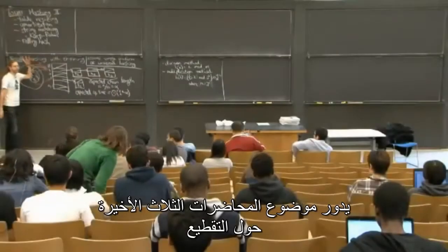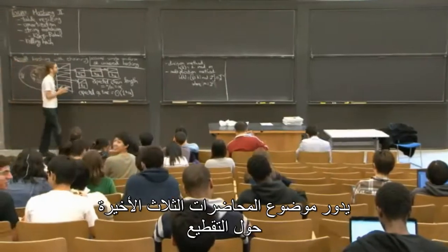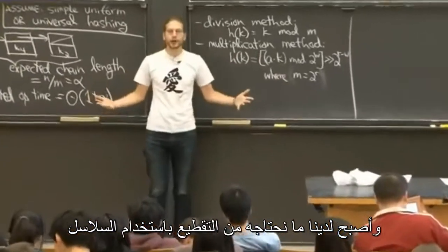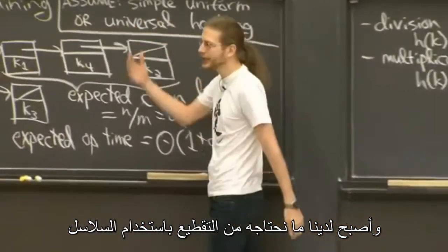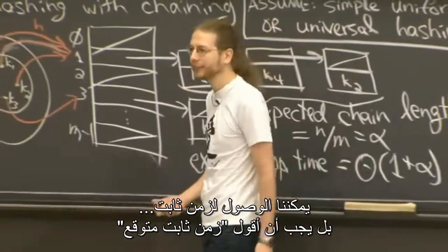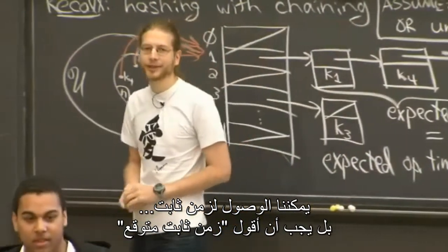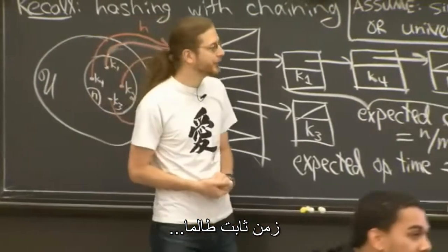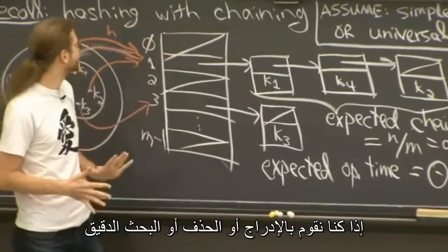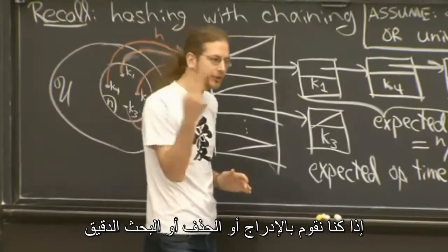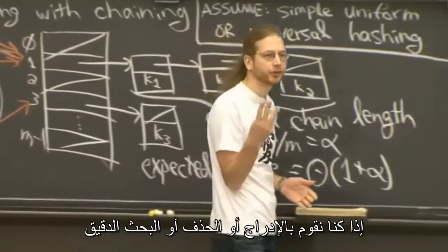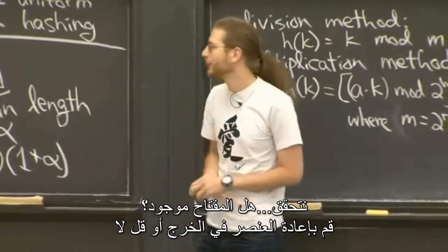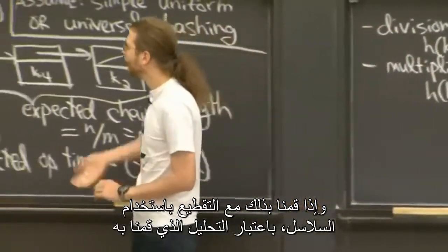A trilogy, if you will, on hashing. We did a lot of cool hashing stuff. We already have what we want with hashing with chaining. We can do constant expected time, I should say, as long as we're doing insert, delete, and exact search — is this key in there? If so, return the item. Otherwise, say no. And we did that with hashing with chaining.